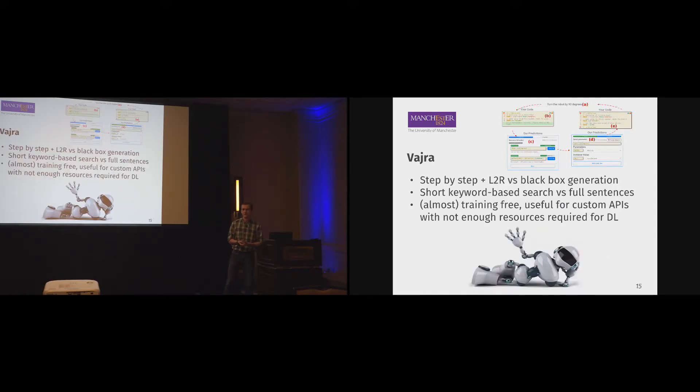So to summarize, we used a step-by-step approach versus a black box program generation. Our users for the tasks we introduced tended to use short keyword-based search as opposed to full sentences. An interesting detail is that this approach is almost training-free and is useful for custom APIs where there are not enough resources available, such as Stack Overflow questions and answers, where you don't have necessarily enough resources required to train a deep learning model. That's Vyra. That's my presentation.